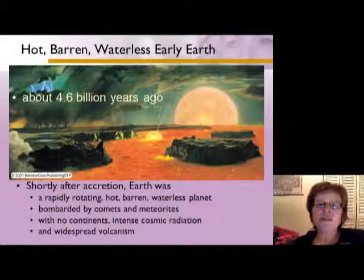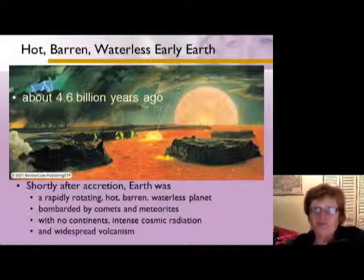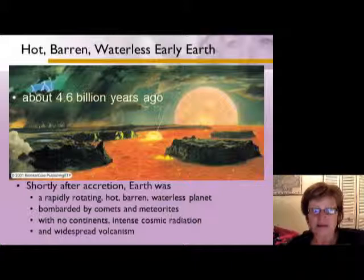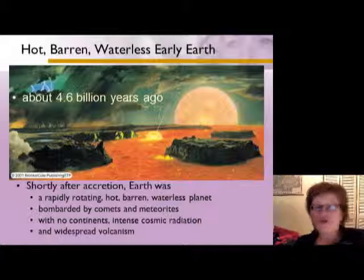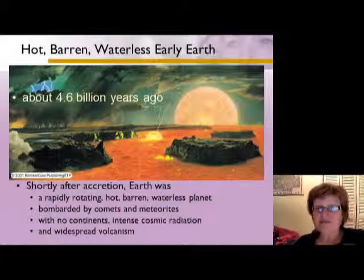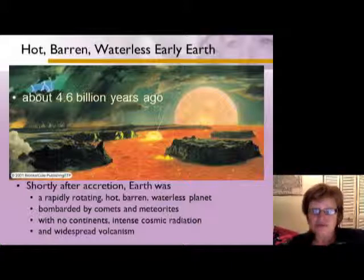When the Earth first formed and accreted as a planet, it was rapidly rotating, hot, and barren. It had no water and experienced heavy bombardment by comets and meteorites from asteroids. There were no continents, and because there was no atmosphere, there was no magnetic field, resulting in very intense cosmic radiation. The only thing we think happened during this time was very widespread volcanism.